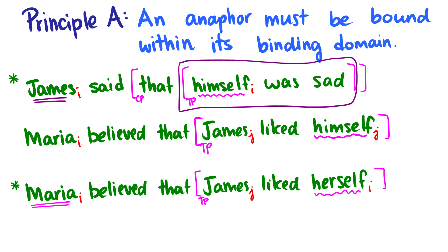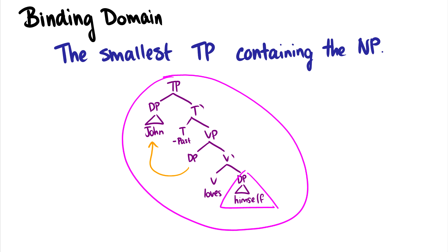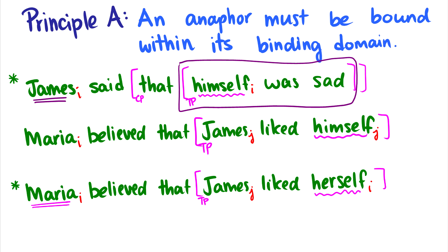So that is Principle A. With trees it's usually easier to see, because we just look at the TPs, circle off all the TPs, and then ask whether the anaphor is in the same binding domain as the thing that's binding it. It's also important to be able to look at sentences and identify where CPs and TPs are, so we can check whether it's bound in a string like this.